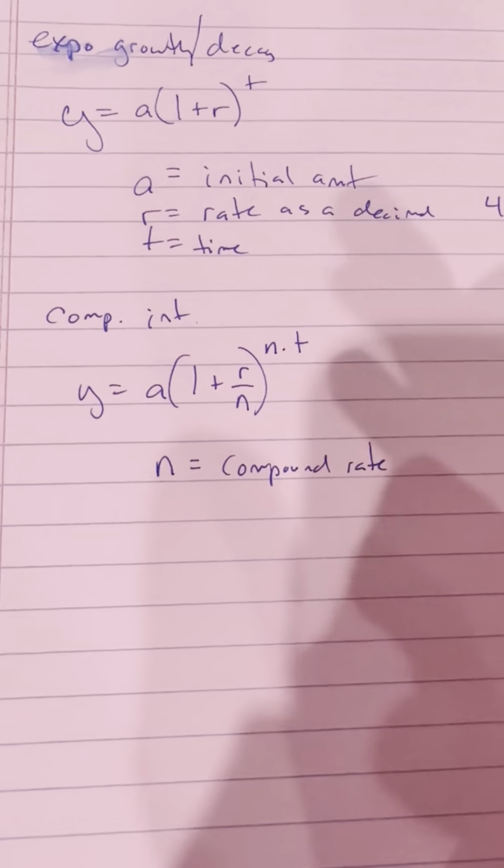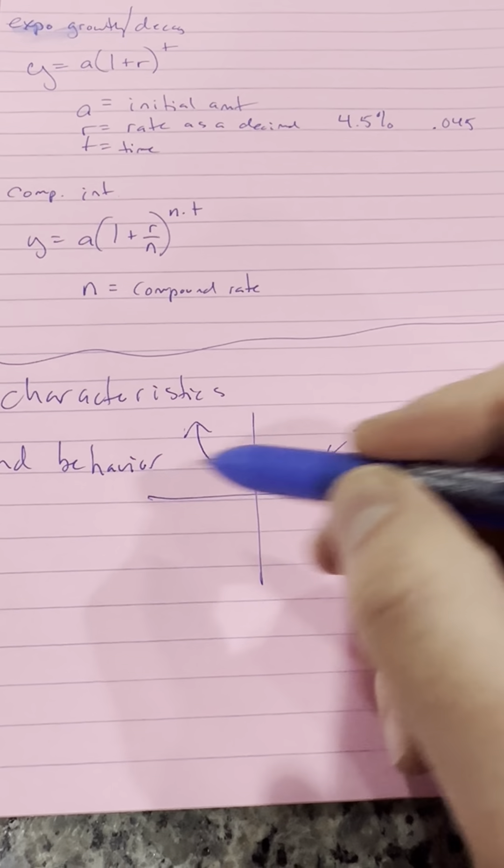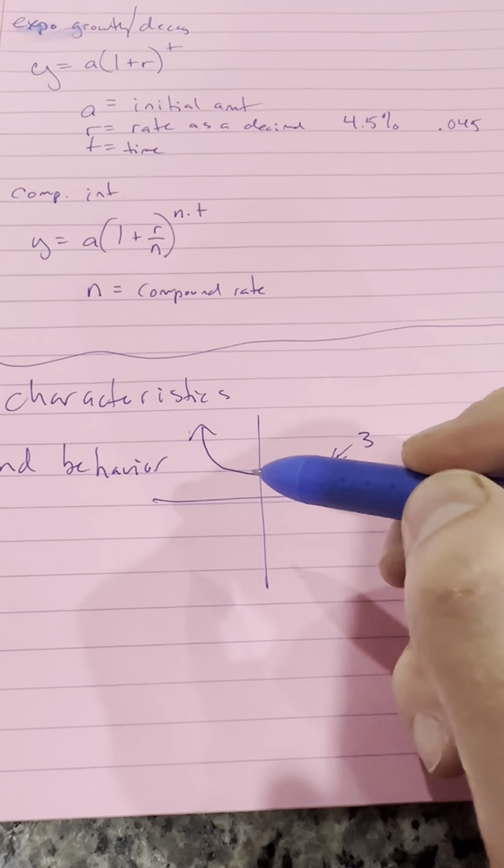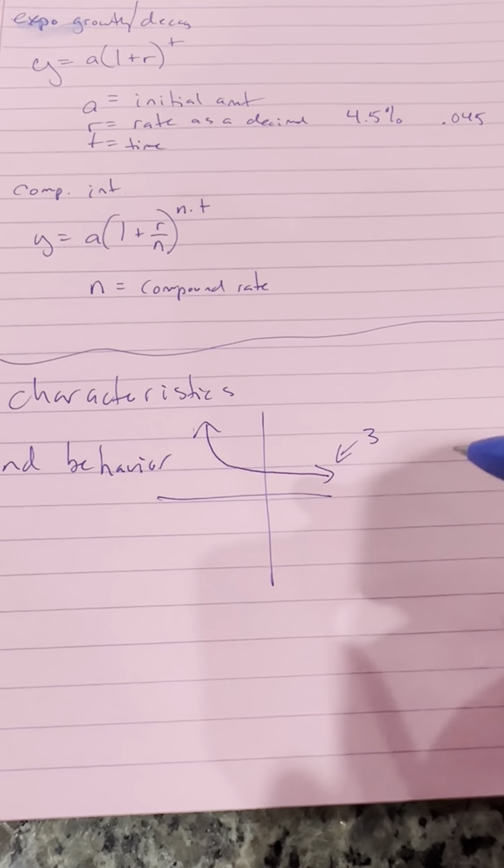That's the first part of the test. You also need to know characteristics of these functions. The characteristics include end behavior, and you will have a graph for these end behavior problems.